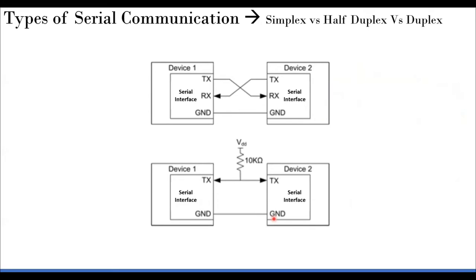Another classification of serial communication is simplex versus half-duplex versus full-duplex. Simplex is one-way traffic: transmitter to receiver only, with no reverse communication possible. Half-duplex uses a single communication line that can be used from device one to device two, and at another point in time from device two to device one — but not simultaneously. Half-duplex is essentially two simplexes at different instances of time. Walkie-talkies are a classic example.